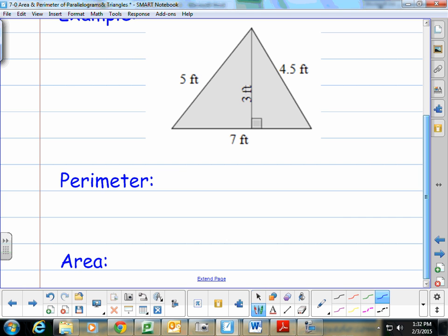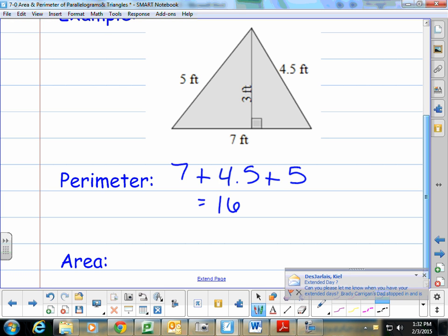For the perimeter, we add the sides around. We do 7 + 4½ + 5, which gives us 16½ feet.